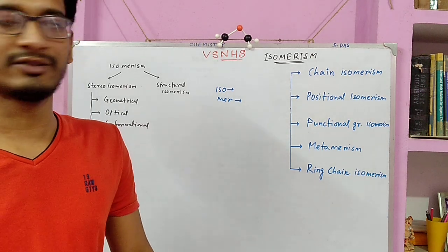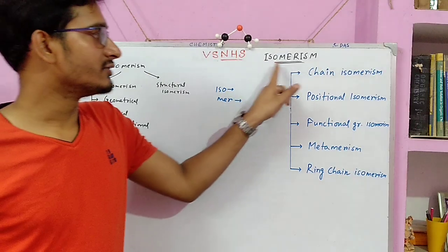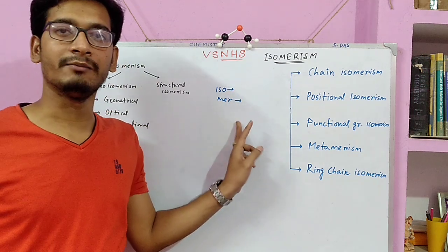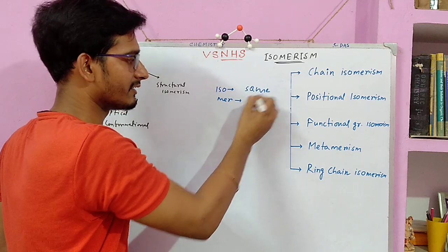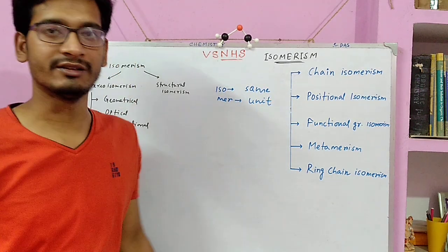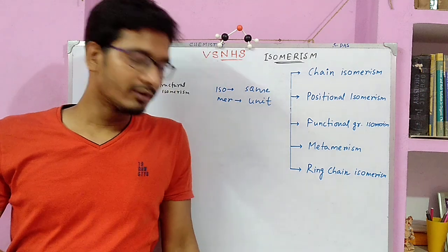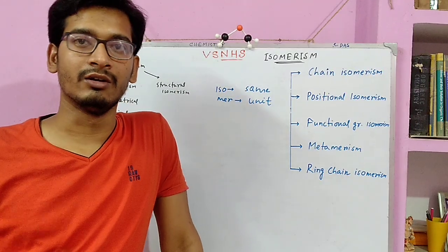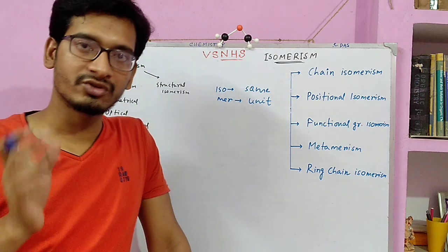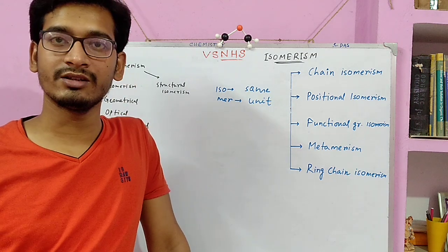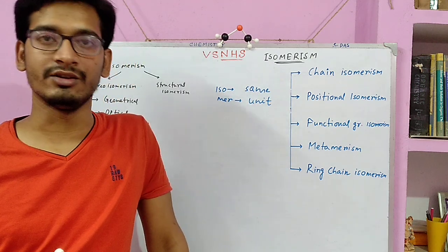Good evening students, today we shall discuss about the topic isomerism. Isomerism comes from two words: 'iso' and 'mer'. Iso means same and mer means unit, that means same unit. A single molecular formula of an organic compound can represent a number of structures; those structures are called isomers, and the property by which they show such isomers is called isomerism.